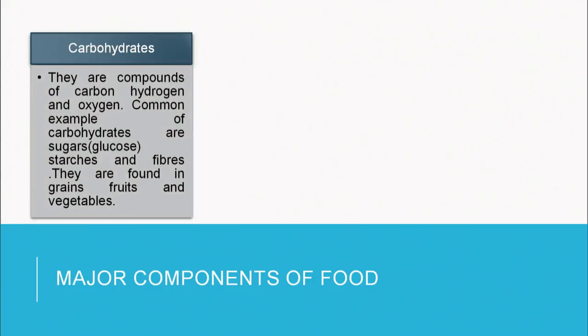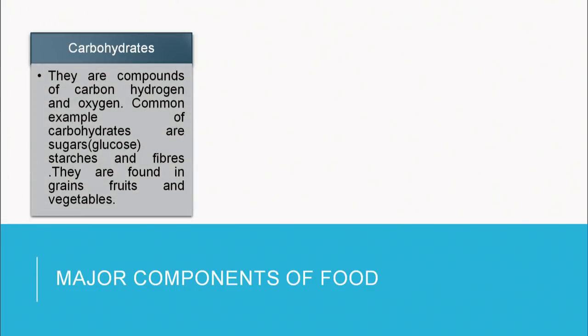What are the major components of food? What are the chemical substances which make up the food? Basically, the three main components of any food are carbohydrates, fats and proteins.